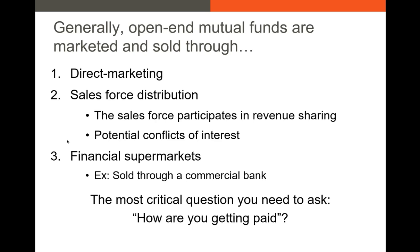How do open-end mutual funds actually get sold? There are a variety of ways. The most obvious is direct marketing — a mutual fund family like Vanguard or Guggenheim may advertise on TV or in the Wall Street Journal. In other words, the fund family might advertise their fund's performance to potential investors to convince them to invest money in one of the funds in the family.